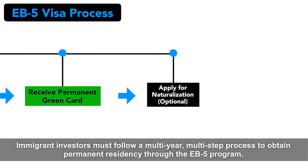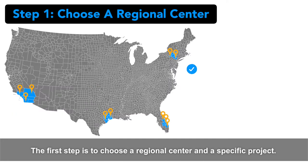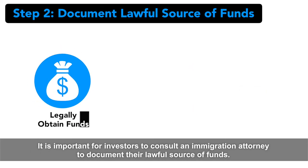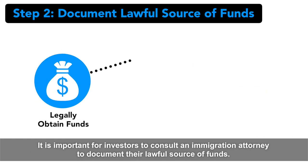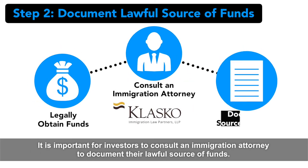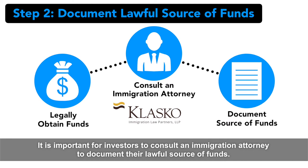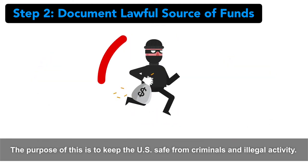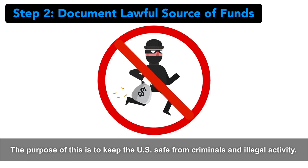The first step is to choose a regional center and a specific project. It is important for investors to consult an immigration attorney to document their lawful source of funds. The purpose of this is to keep the U.S. safe from criminals and illegal activity.